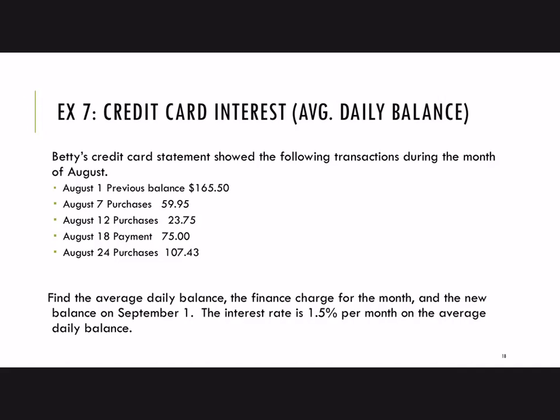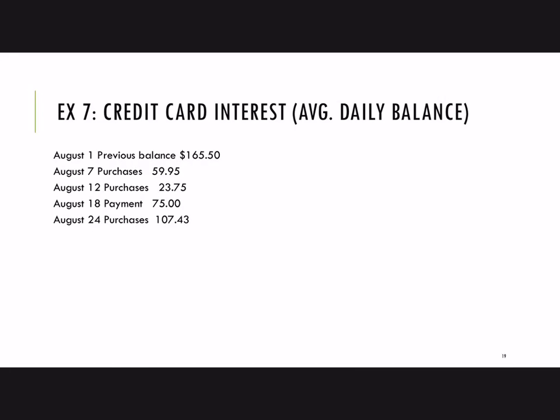Example 7: Betty's credit card statement showed the following transactions during the month of August. On August 1st, she was carrying a previous balance of $165.50 — this is the unpaid balance left over from July. Then she makes a purchase on August 7th, another purchase on the 12th, a payment on the 18th, and another purchase on the 24th. We need to find the average daily balance, finance charge, and new balance.